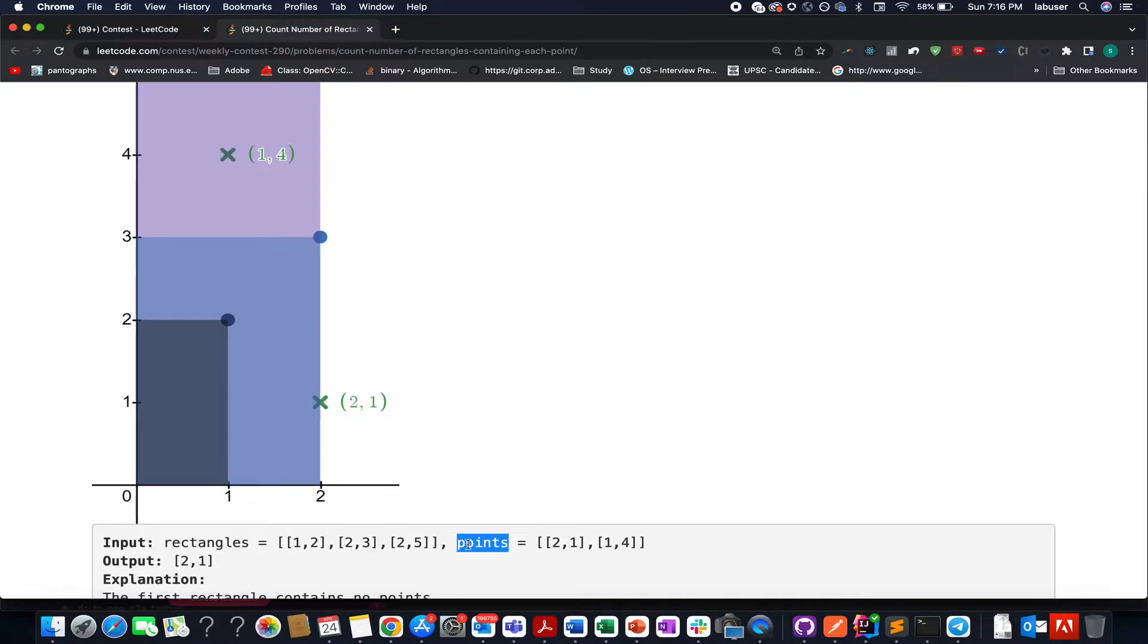Along with this we are given the points array. What we need to do is identify the number of rectangles that contain each point. So 2,1 is present over here. It is contained by 2 rectangles as a result of which the answer becomes 2. And for 1,4 it is placed over here. It is only contained within one rectangle which is 2,5 and the answer becomes 1. That is what we need to return as the final answer.